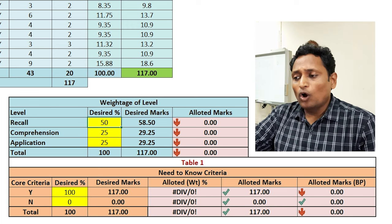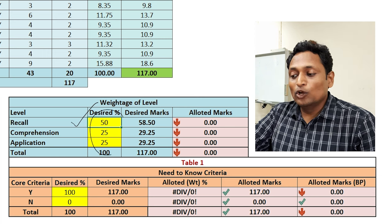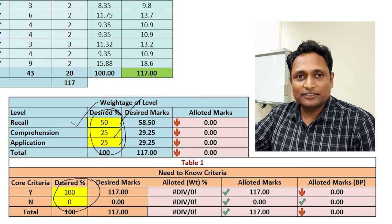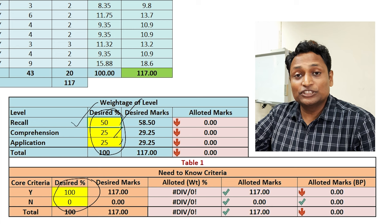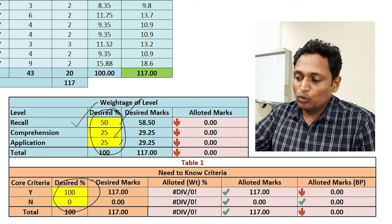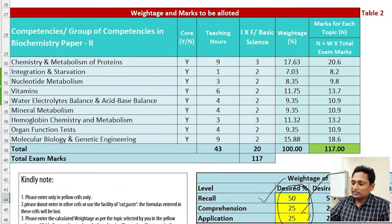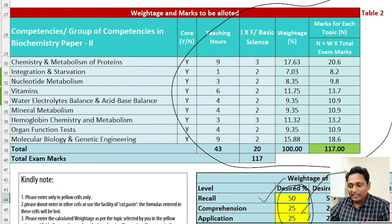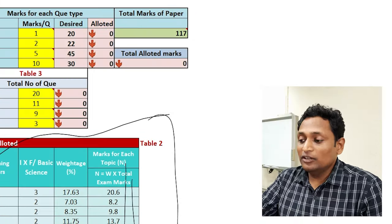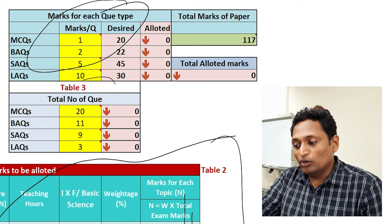Come to table number 1 of paper 2. As I have already told you that we have to make entries in yellow boxes or yellow cells. Here I have put 50, 25 and 25. You can change it but that is not required because this is phase 1 and biochemistry, so we have to keep it 50, 25 and 25 and core being 100 percent and non core being 0 percent. Then this is table number 2 which gives you a proper idea about the spread of weightage and the marks as per the criteria.